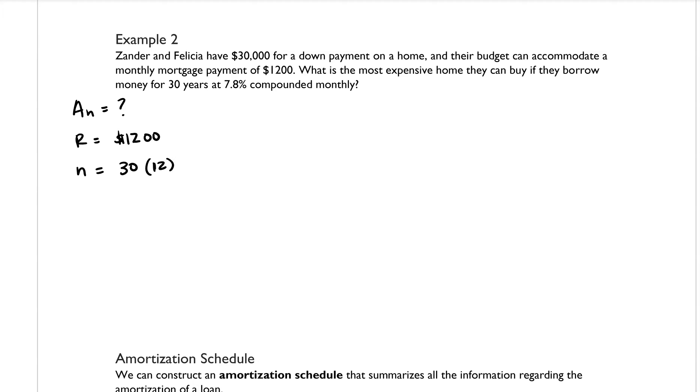So that's 12 times a year, so in total there will be 360 payments. And we know that our annual interest rate is 0.078, and we want to divide that by 12, which will give us 0.0065.